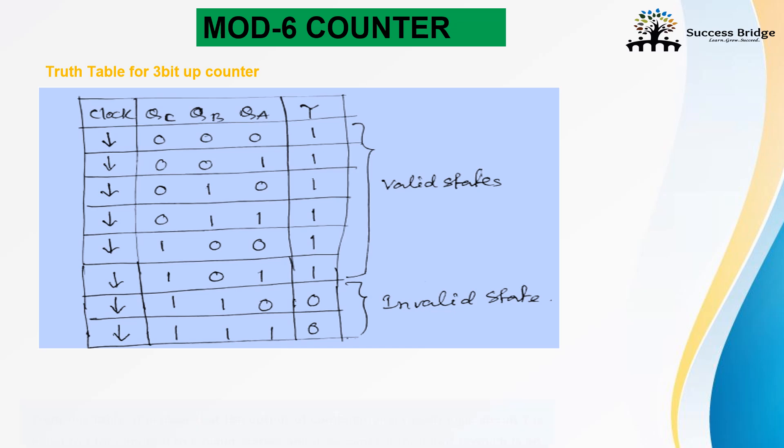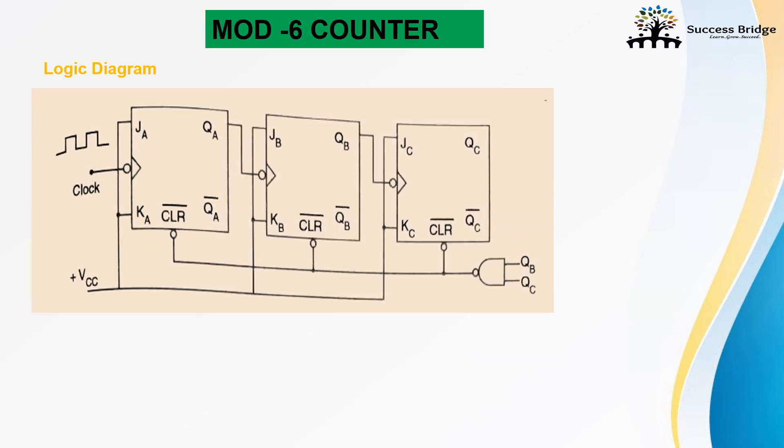Next is logic diagram. This is the logic diagram of mod 6 counter. This mod 6 counter required three flip-flops, names are JA, JB and JC. These are the input which is connected to the logic 1.